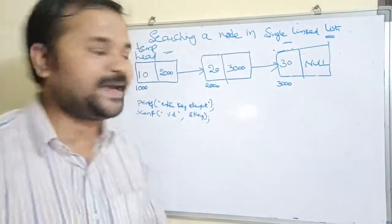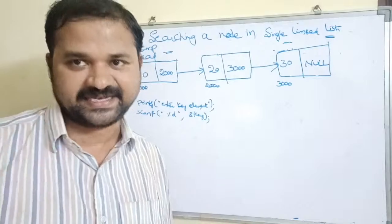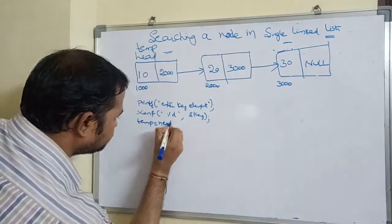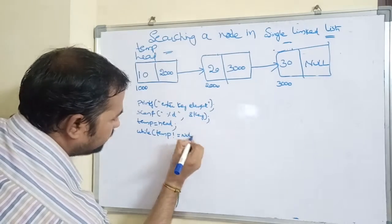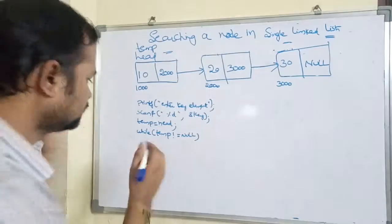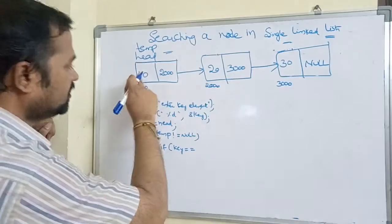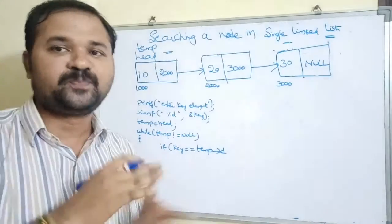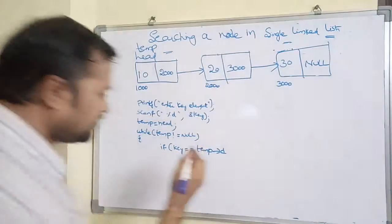The logic is simple: we compare the key element with elements 10, 20, and 30 until the key element is found or the list is exhausted. Initially we set temp equal to head. Then we search as long as the list is not null — while temp is not equal to null, there is a node. We compare the key element with that node's data using temp->data. If key == temp->data, the element is found.